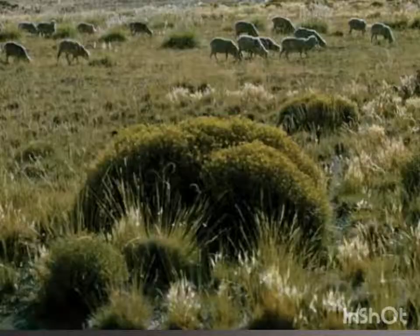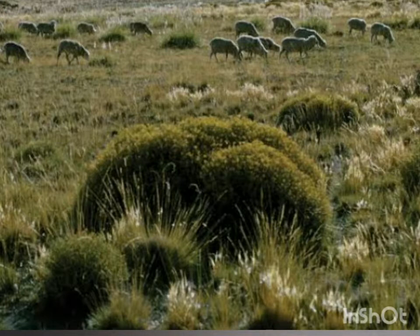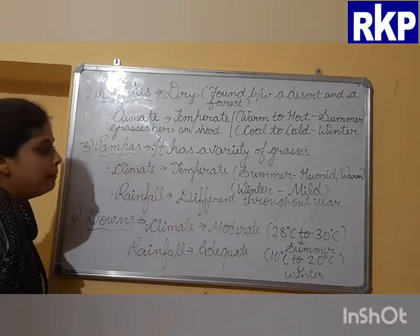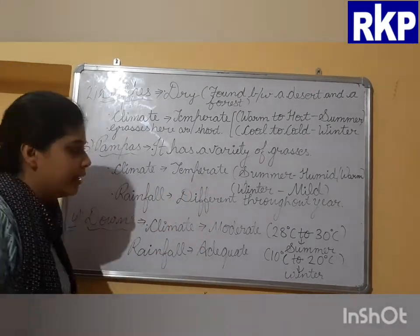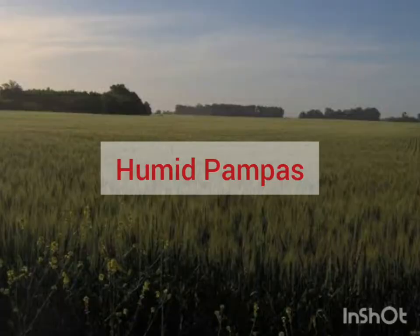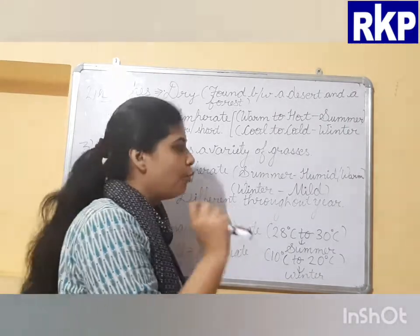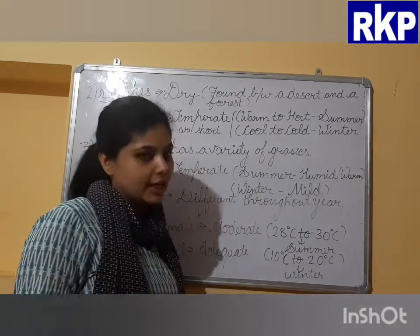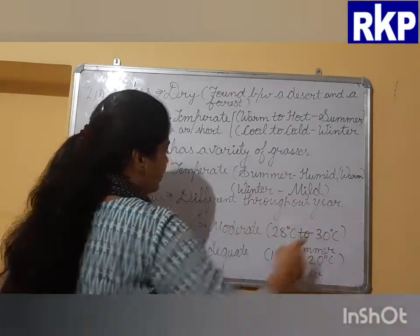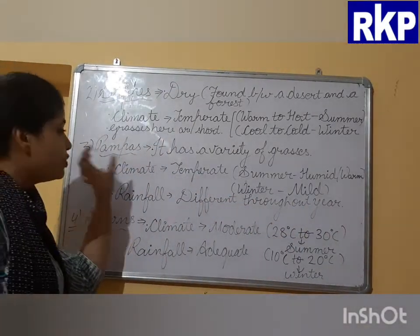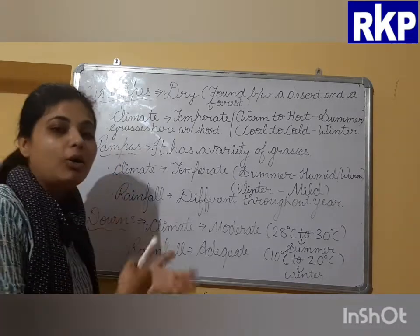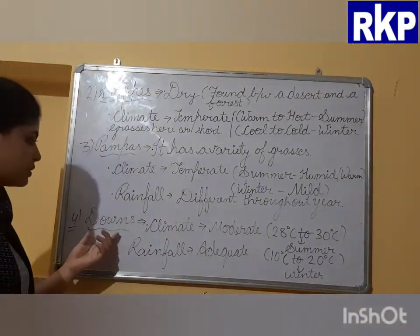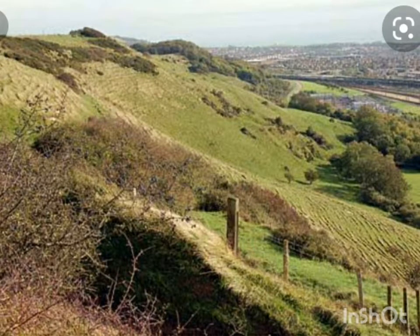Next is Pampas — another name for temperate grasslands, found in South America. Pampas has a variety of grasses which are good for grazing animals. The climate is temperate: moderate and humid in summer — meaning the air contains moisture — and mild in winter. The amount of rainfall varies throughout the year.